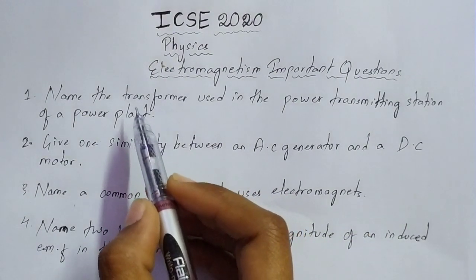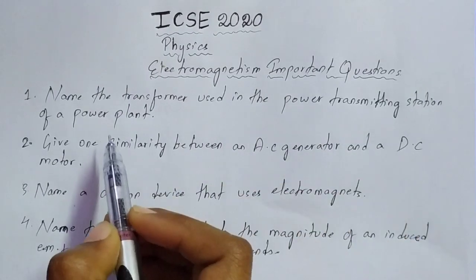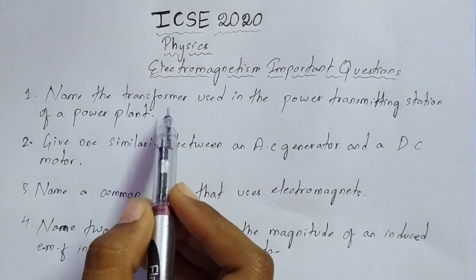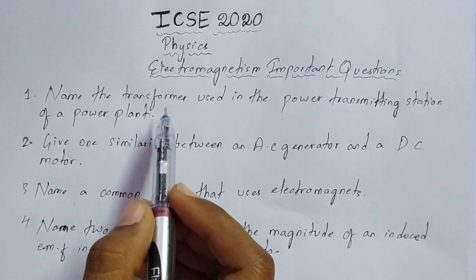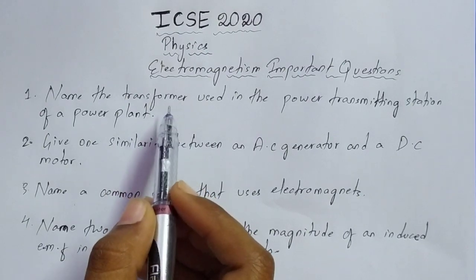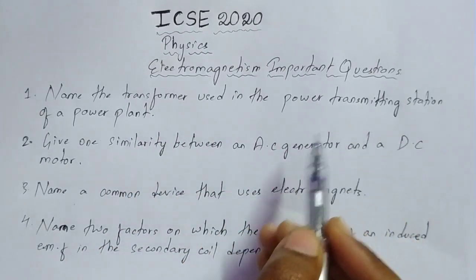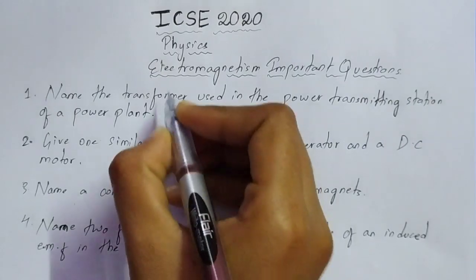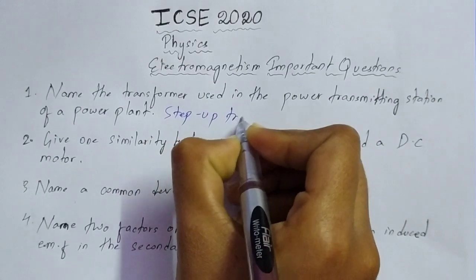The first question is: name the transformer that is used in the power transmitting station of a power plant. You must know that there are two types of transformers — one is a step-down transformer and one is a step-up transformer. The transformer used in the power transmitting station of a power plant is the step-up transformer.